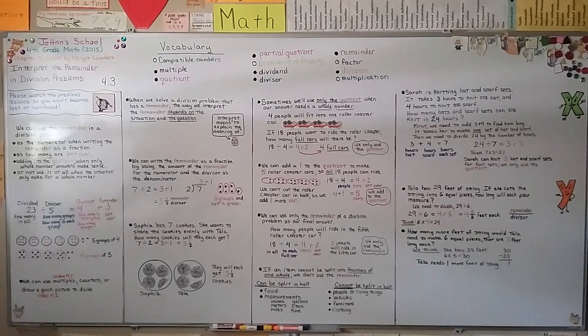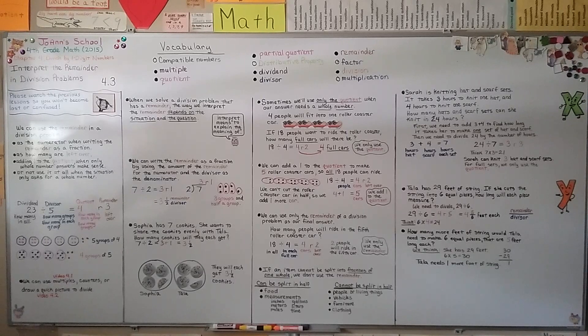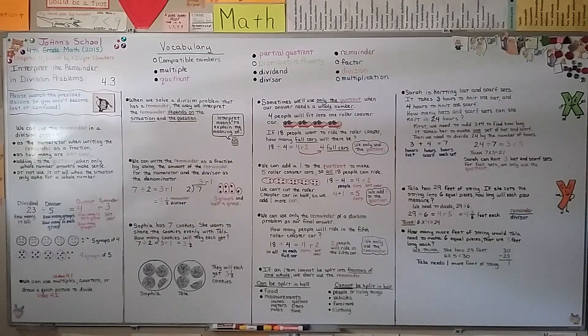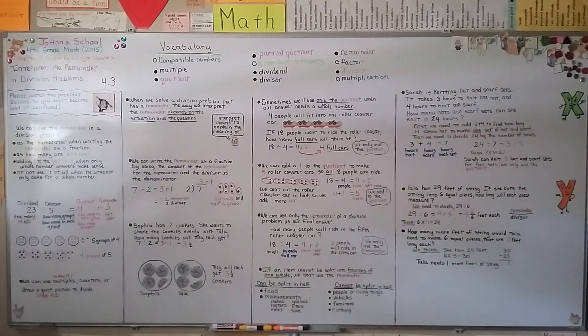So, when we're answering division problems, we might have problems where we only use the quotient, where we add 1 to the quotient, or where we only use the remainder. In our next lesson, 4.4, we're going to divide tens, hundreds, thousands by a one-digit number. Have a really great day, and I hope I'll see you there.